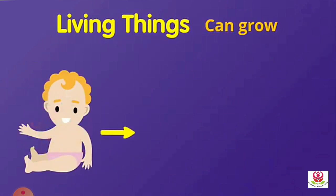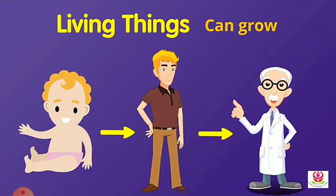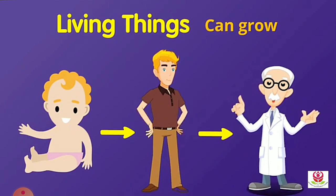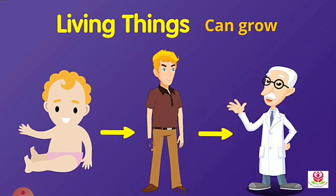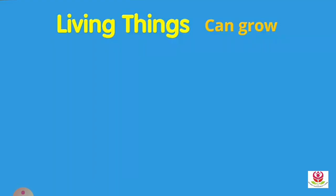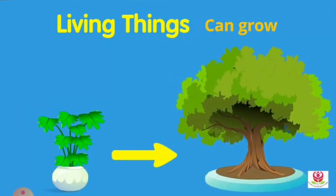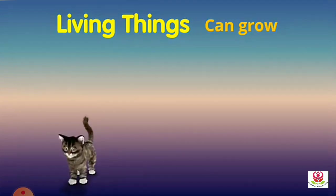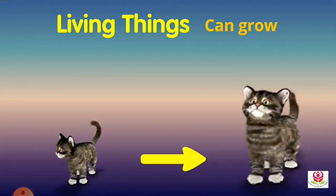Living things can grow. A baby can grow to a child, a boy, and then to a big man. A plant can grow into a big tree, and a kitten can grow into a cat.